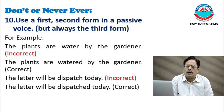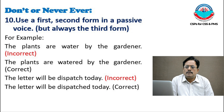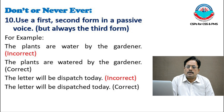Never ever use a first or second form in a passive voice — always use the third form. With auxiliary verbs we mostly use the -ing form, but for passive we use the third form. For example, 'the plants are watered by the gardener' is correct. 'The letter will be dispatched today' — using the third form 'dispatched' — is the correct sentence.